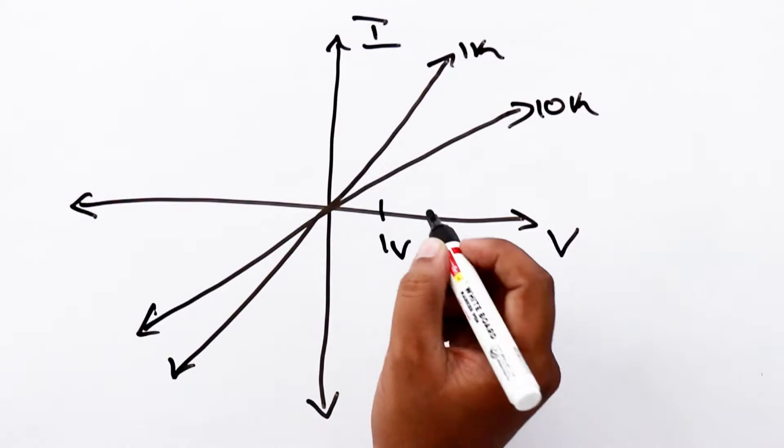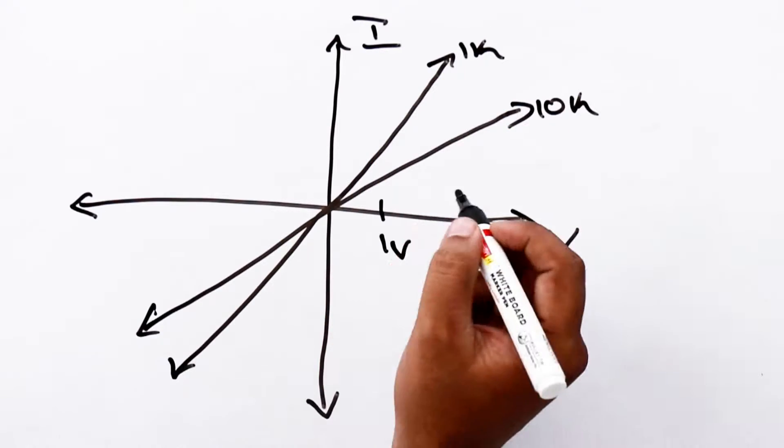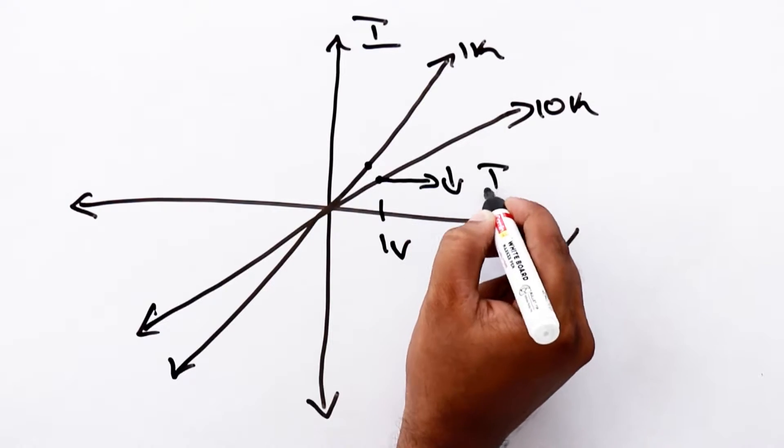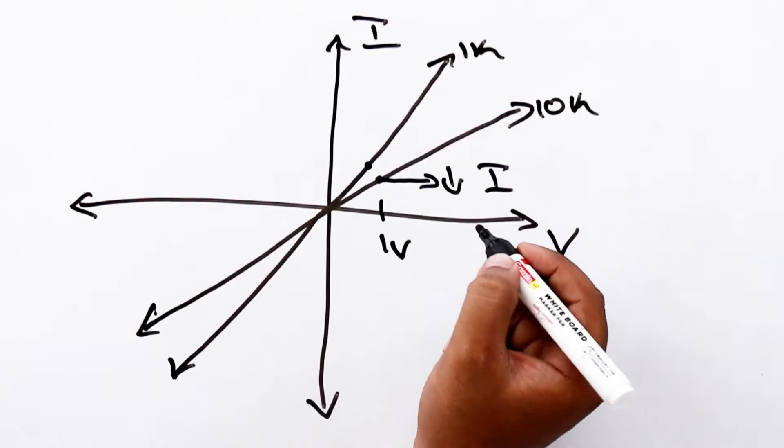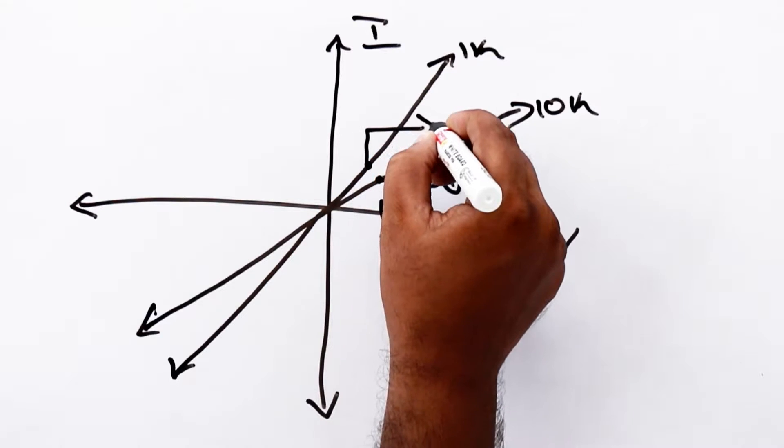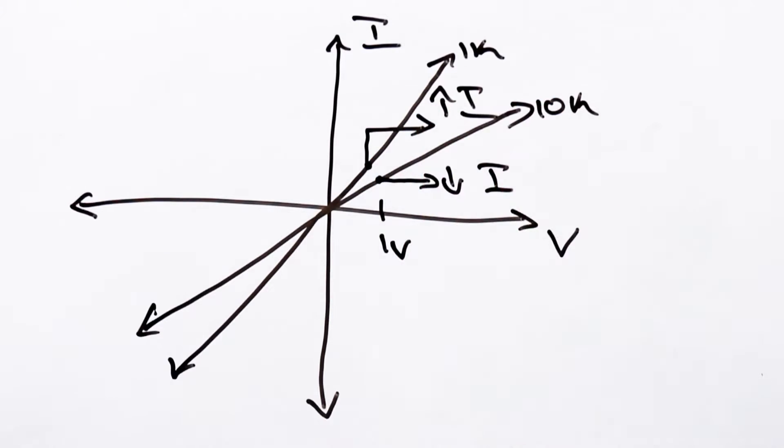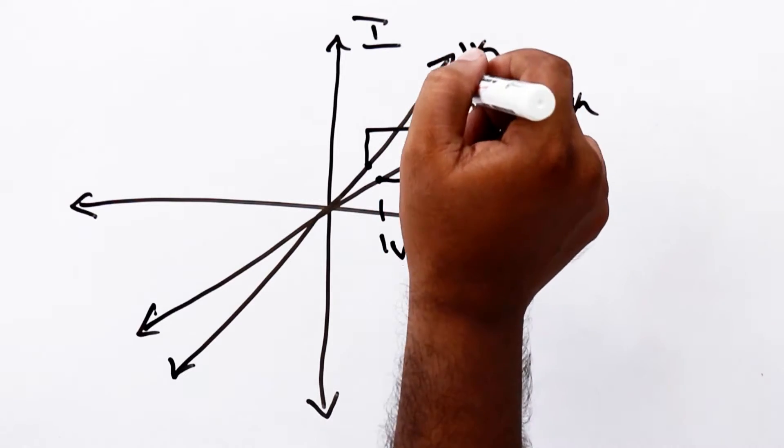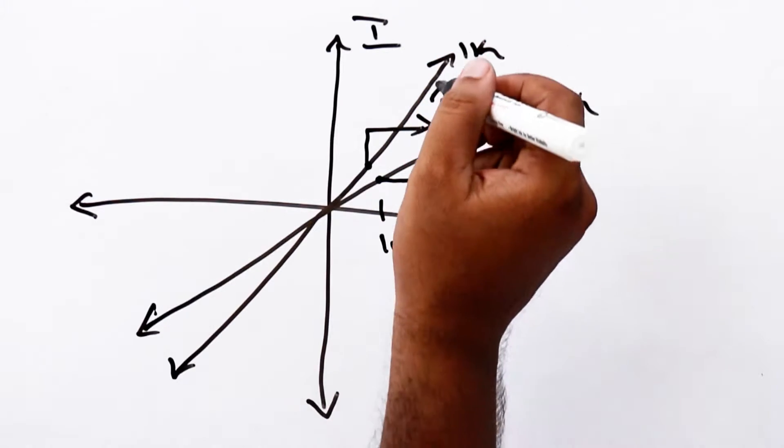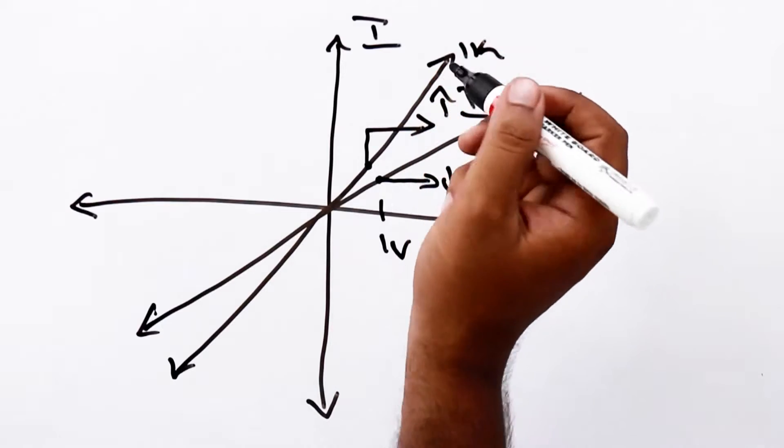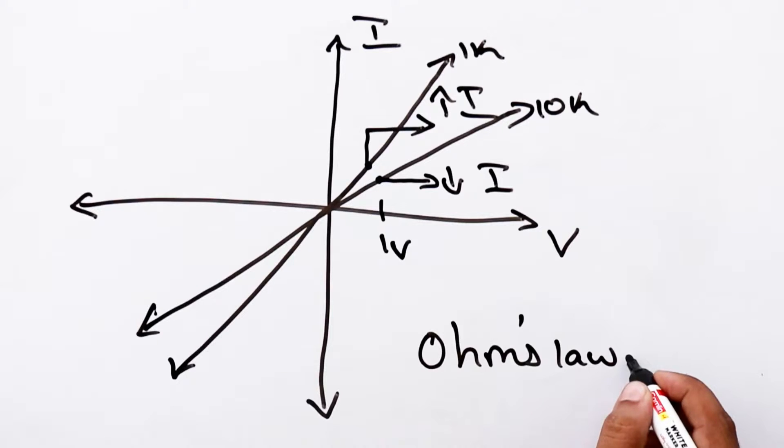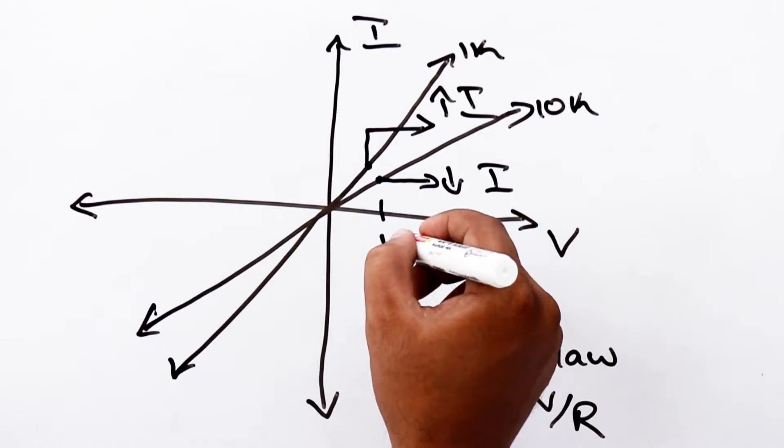Now, let's say we are applying 1V across both of these resistors. Now, from the graph, you can observe for 1V, 10K resistor allows only less current comparing to 1K resistor. This implies that higher resistance, 10K, allows less current to flow when 1V is applied to it than the lower resistance of 1K. You can use the Ohm's law, I equal to V by R, to calculate the current flow in these resistors.